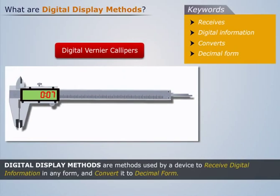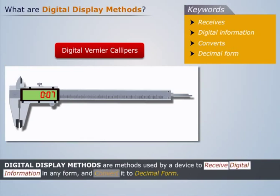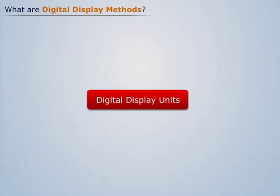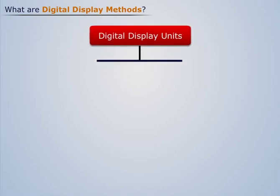Thus, digital display methods are methods used by a device to receive digital information in any form and convert it to decimal form. On the basis of format, digital display units may be classified as planar and non-planar.